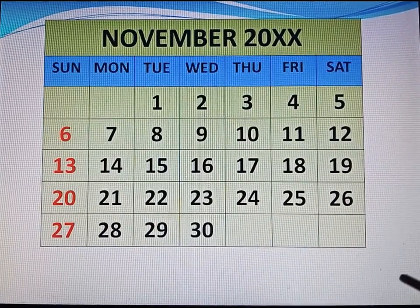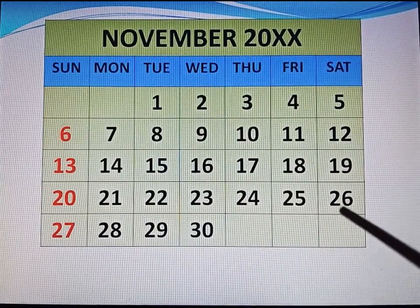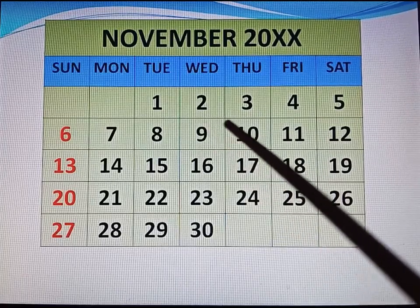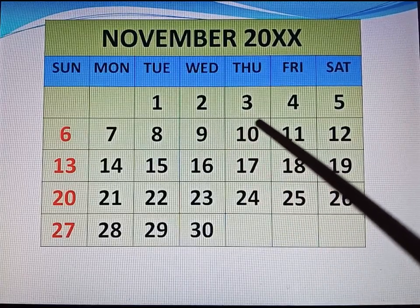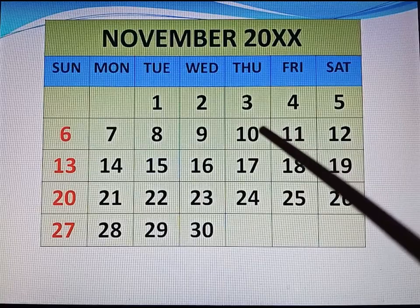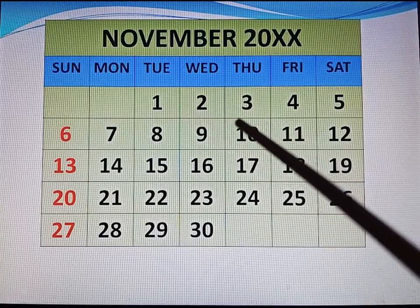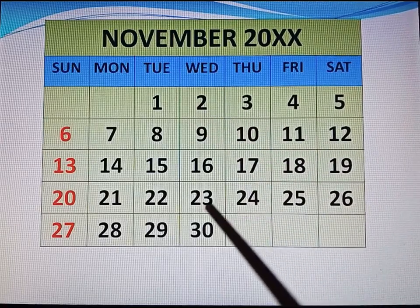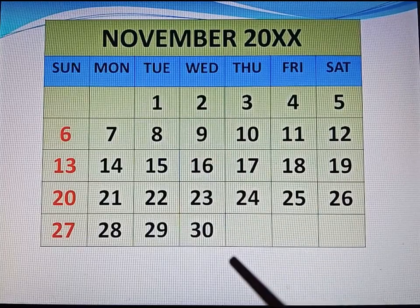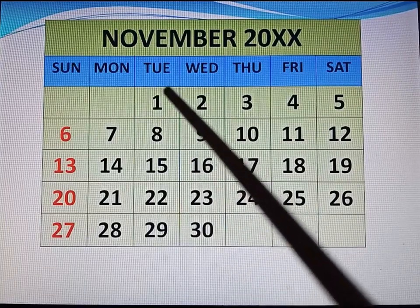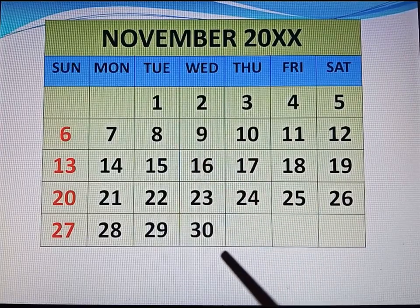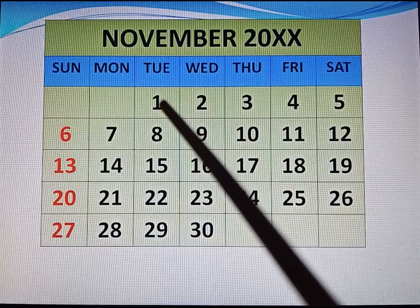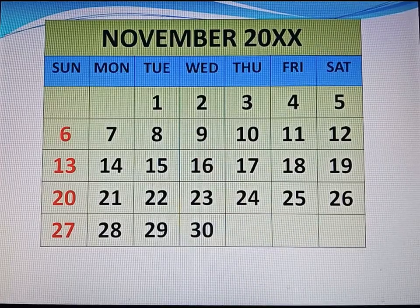Now first we will calculate multiples of 2, then we will calculate multiples of 3, and then we will find the common multiples between them. We will write multiples only between 1 to 30 because we are given only 1 to 30, so we will calculate the multiples only up to 30.